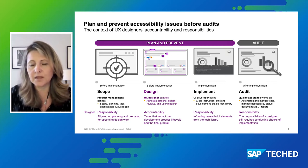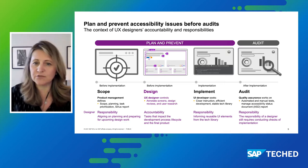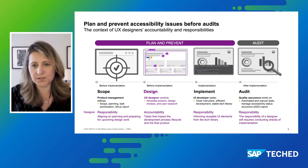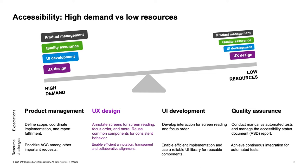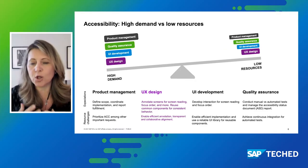They should be talking the same language. Accessibility is not a task for one unique role — it requires serious collaboration and alignment. This slide shows the high demand versus the low resources we have, and why we have to be smart about planning accessibility. This illustration focuses on how the low resource — related to planning, designing, implementing, and testing products for accessibility — contrasts with the high demand, which makes all these roles face different challenges.